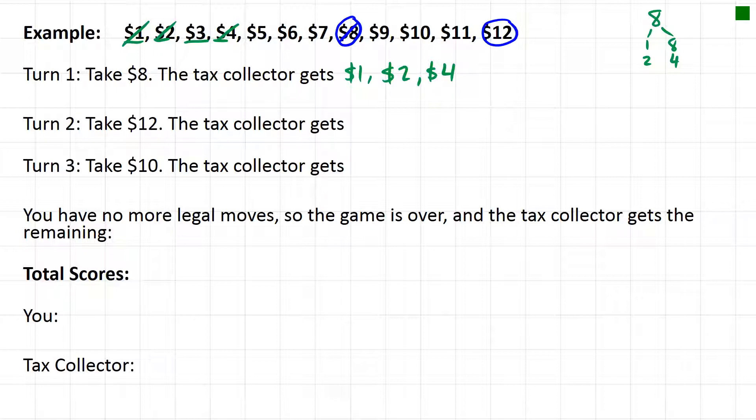So looking through the list, three is a factor of 12, and actually so are one and two and four, but because they were already chosen he's not gonna get them again. So three is another factor of 12 and six is a factor of 12, and those are the only ones that are left: three and six. So we've now got eight and twelve and the tax collector has one, two, four, three, and six.